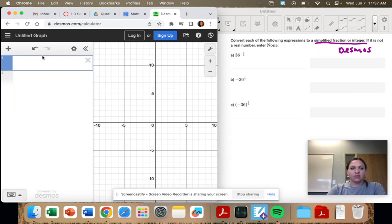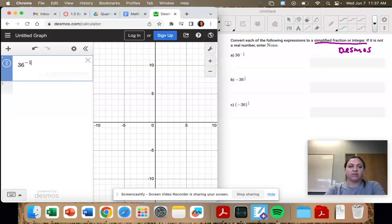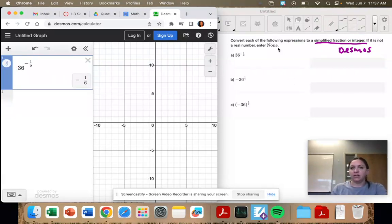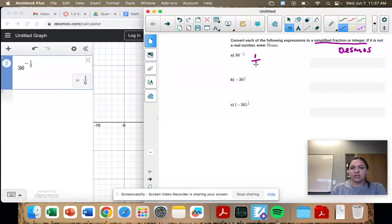So let's enter these. 36 to the power of negative one-half. And we want it as a fraction, so I'm going to click the fraction button. So one-sixth.